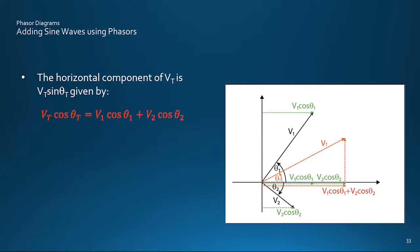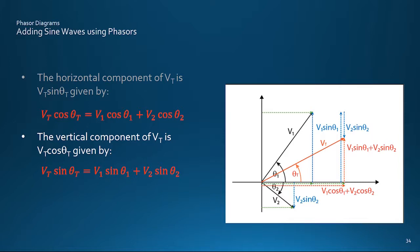The sum in the horizontal direction is v1 cosθ1 plus v2 cosθ2, as shown here, which must be equal to the horizontal component of the total vt cosθt. Similarly, the sum of the two vertical components v1 sinθ1 and v2 sinθ2 must add up to the vertical component of the sum vt sinθt.